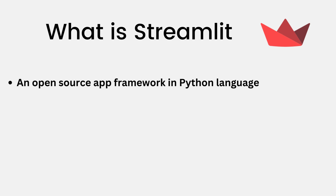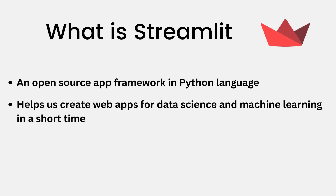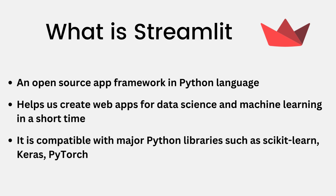Streamlit is an open source app framework for Python, and it is written in Python — not JavaScript or any other programming language. It helps us to create web apps for data science and machine learning projects within a short period of time, and it is also compatible with major Python libraries such as scikit-learn, Keras, PyTorch, and other machine learning libraries.